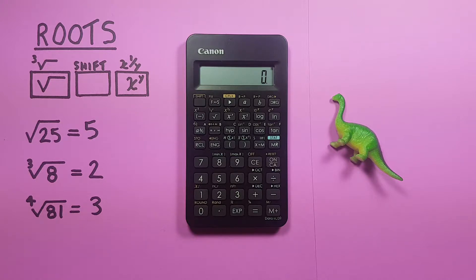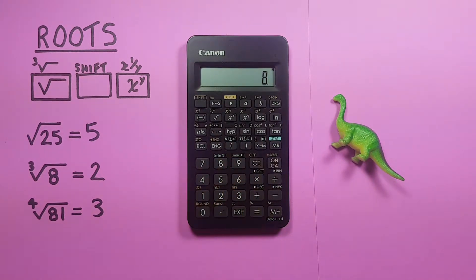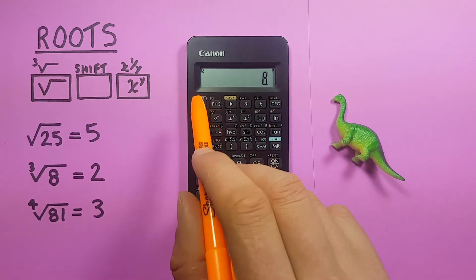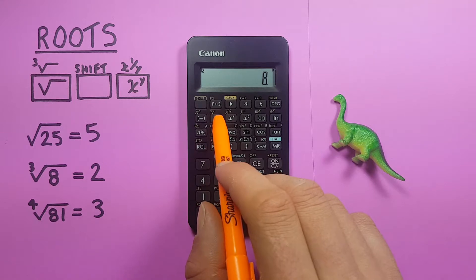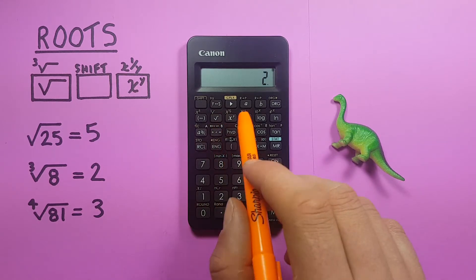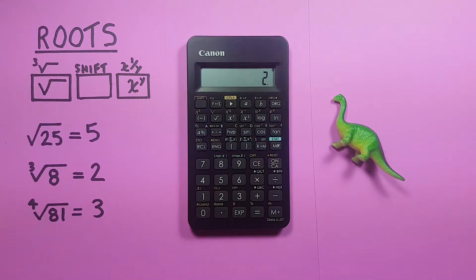If we want to find the cube root, what we do again is place the number on the screen and then press shift square root, which gives us the secondary function of this key, the cube root, and that gives us 2, which is the correct answer.